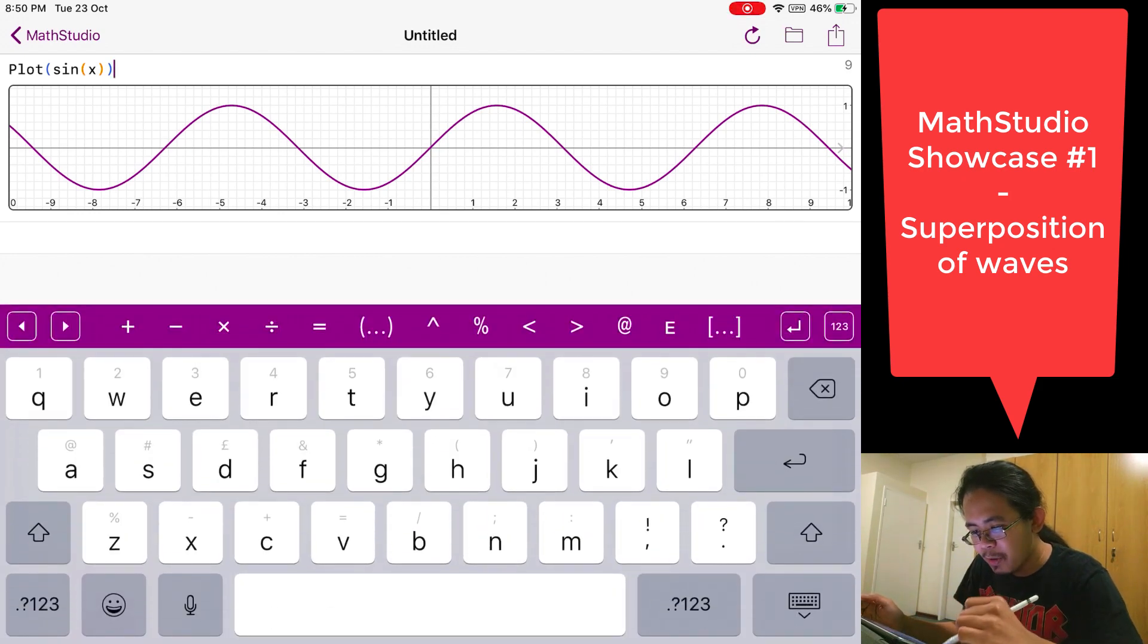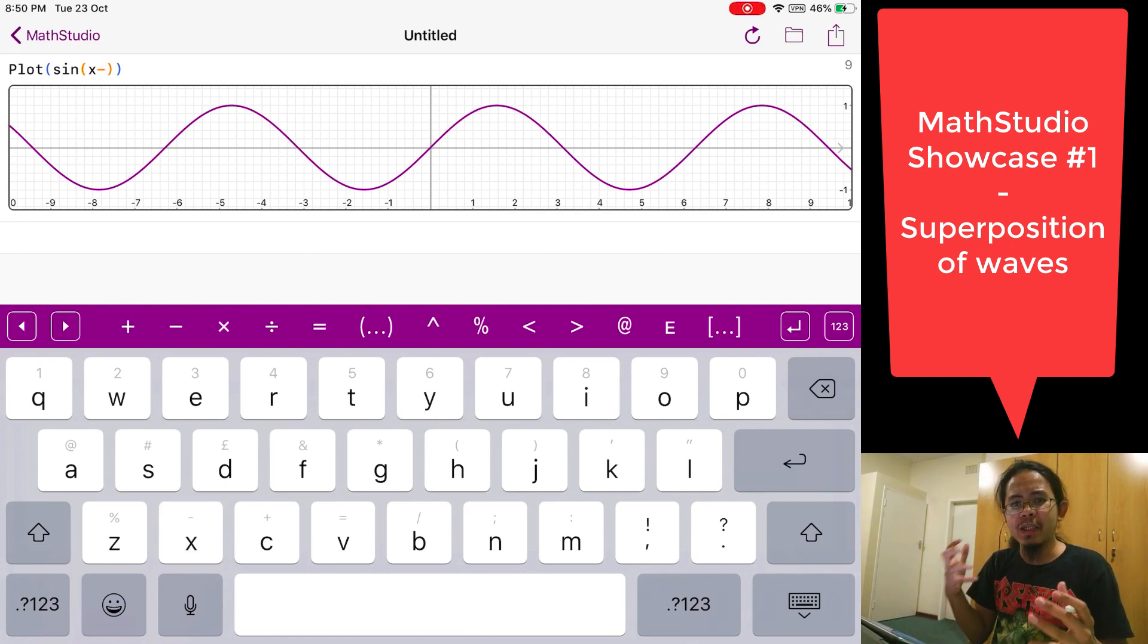However, the nice thing about MathStudio is that it has this built-in variable called capital T. And every time you call the variable capital T, then automatically you're telling it to animate something. So your function, if you're using the capital T, depends on something that is running as a function of time. As time goes on, that capital T changes automatically.